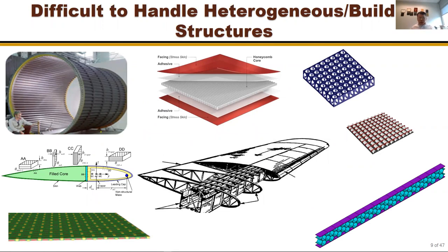This typical approach is difficult to handle heterogeneous and built-up structures. For a stiffened cylinder, honeycomb sandwich structure, or a panel with holes everywhere, it's difficult to make these assumptions. Consider a helicopter rotor blade with skins made of hundreds of layers filled with foam — when doing preliminary design, you want to treat it as a beam to find extension, bending, and torsion stiffness needed for aeroelasticity analysis.